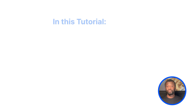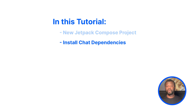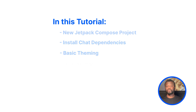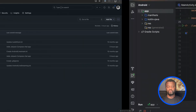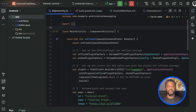In this tutorial, we will create a new Compose project in Android Studio, then we will install the Stream Chat SDK and configure it to work with the Android app. I will show you some basic customization options, and finally we will test the app. So let's go back to Android Studio and create a new project.